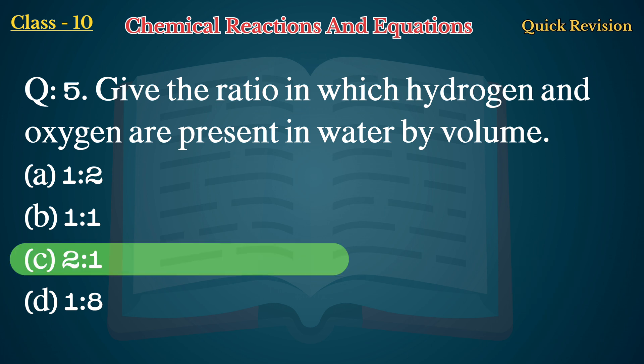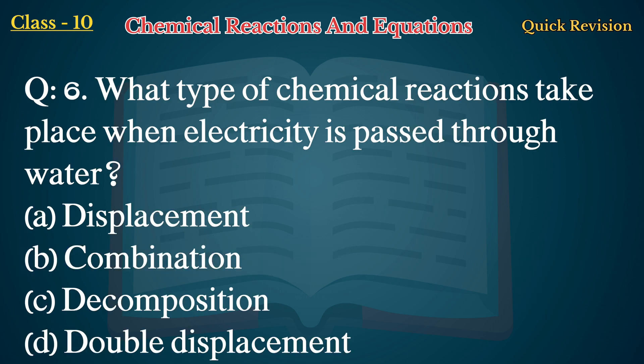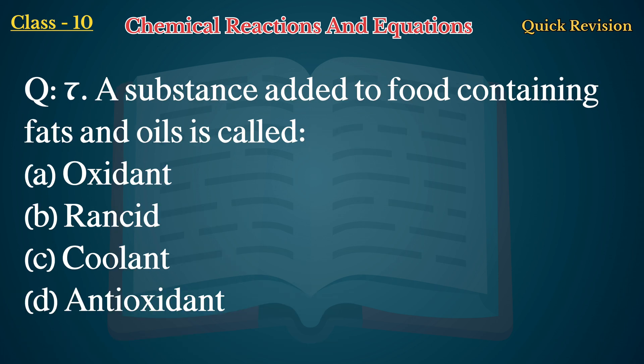Question No. 6: What type of chemical reactions take place when electricity is passed through water? A. Displacement, B. Combination, C. Decomposition, D. Double displacement. Answer: C. Decomposition reaction.